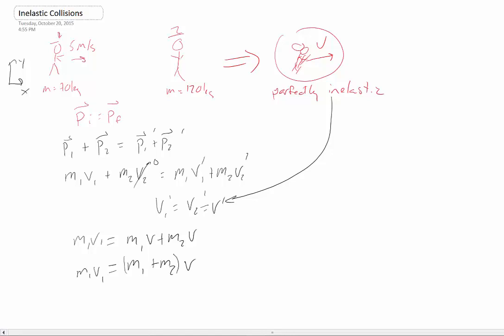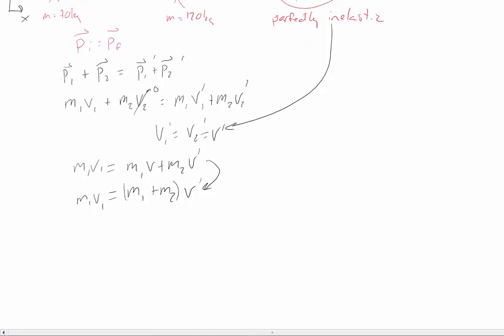And that's equal to m1 v1. And that's the thing that's so useful about perfectly inelastic collisions, is that basically you're able to do this step right here where we just factor out those masses and have a common final velocity, which we put prime on it because it's at the end.